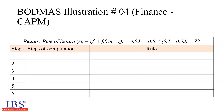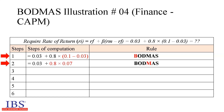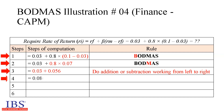Let us look at a few applications of BODMAS in finance. Illustration 4 shows the application of BODMAS in the Capital Asset Pricing Model (CAPM) for arriving at the required rate of return of assets in the capital market. The associated formula is: Ri = Rf + β × (Rm − Rf). The expression computed is 0.03 + 0.8 × (0.1 − 0.03). Step 1 computes the bracket: 0.1 − 0.03. Step 2 computes the multiplication: 0.8 × 0.07. Step 3 computes the addition: 0.03 + 0.056. Step 4 gives the result.